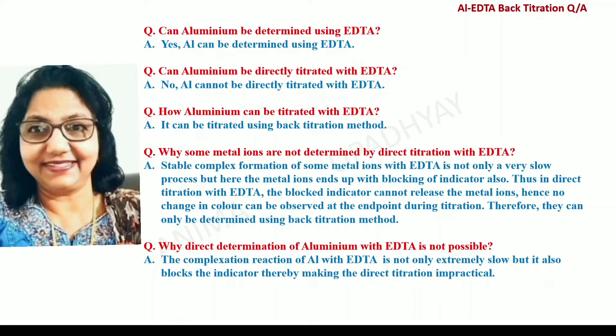In direct titration with EDTA, the blocked indicator cannot release the metal ions. Hence, no change in color can be observed at the end point during the titration. Therefore, they can only be determined using back titration method. The complexation reaction of Aluminium with EDTA is not only extremely slow, but it also blocks the indicator, thereby making the direct titration impractical or impossible.